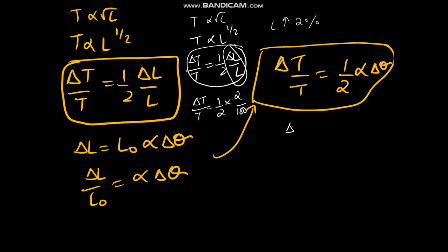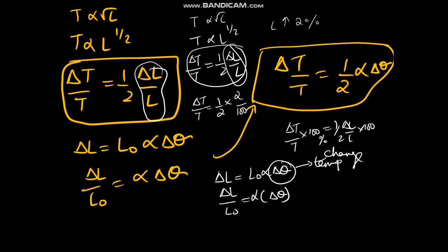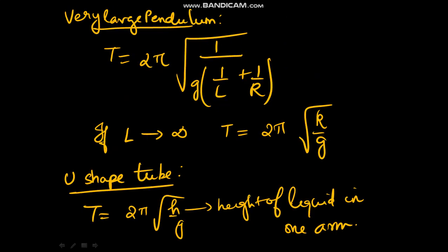If they ask for percentage change in time, it is (ΔT/T) × 100 = (1/2)(ΔL/L) × 100. From linear expansion, we know that ΔL = L₀·α·Δθ, where Δθ is the change in temperature. So ΔL/L₀ = α·Δθ. Substituting, α is the coefficient of linear expansion and Δθ is the change in temperature.